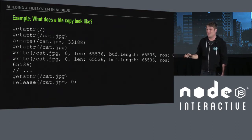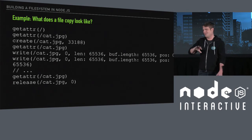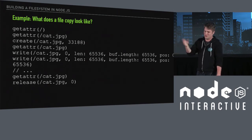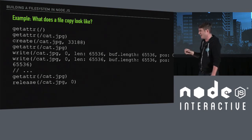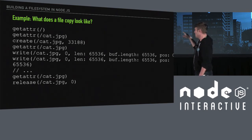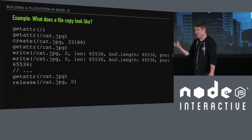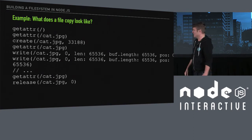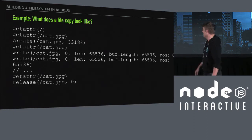Many people in this room have very customized shells that show whether you've committed to Git, whether you've pushed master, whether the directory is dirty or not. When you run this and you're interacting with your shell, you actually get to see all of the read and write calls your shell extensions make — which sometimes is pretty scary.